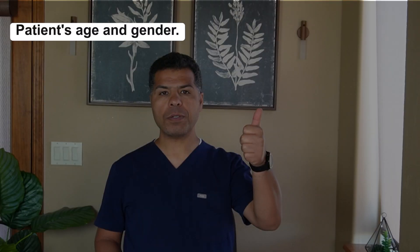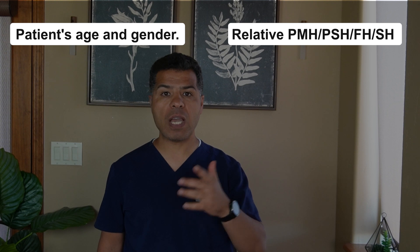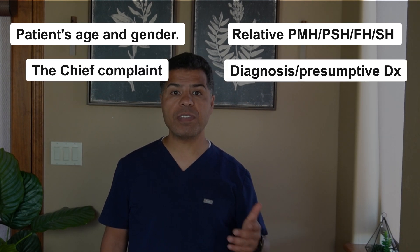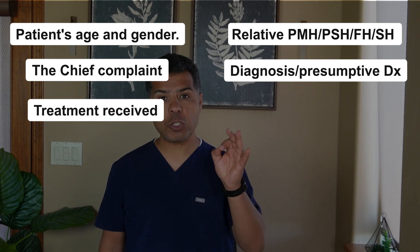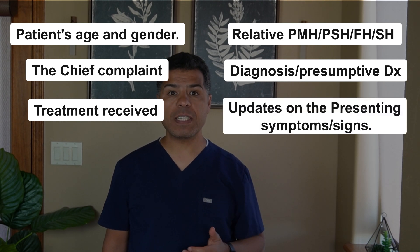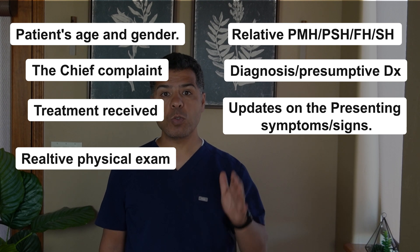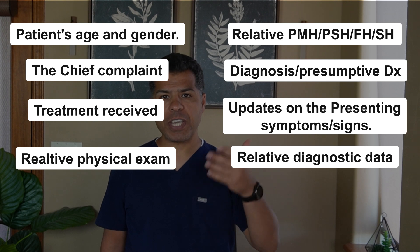The following elements are the backbone for any case presentation: patient's age and gender, relative past medical history, surgical history, family history, social history — not everything, just the relative ones — the chief complaint and any diagnosis or presumptive diagnosis made on admission, the treatment received on admission (only mention treatment provided for the active acute problem), updates on the presenting symptoms or associated symptoms or signs, relative physical exam findings, vital signs, relative diagnostic data — imaging, labs, EKG, etc.